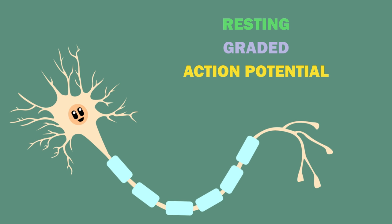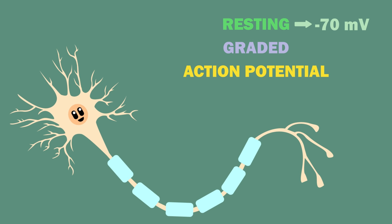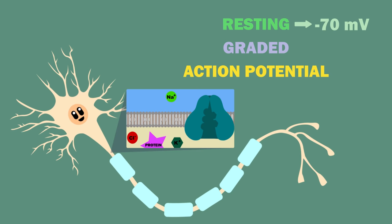First, let's see what happens at resting potential, which is at minus 70 millivolts. The neuron maintains this potential due to differences in permeability of ions on either side of its cell membrane, as well as the sodium-potassium pump.